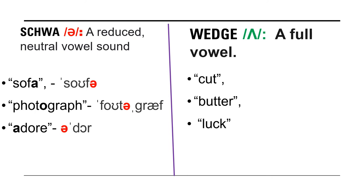Schwa is a reduced neutral vowel sound, while wedge is a full vowel — as in 'cut,' 'butter,' 'luck.' So what is the difference between the sounds, if there is any? There is little to no difference phonetically based on its sound or production between schwa and wedge. We use schwa sound when we don't need to fully articulate the vowels which aren't stressed in the word. In the case of an unimportant vowel which we don't need to articulate fully, we take the easy way and use a reduced sound. We make a schwa because we have got better things to do than pronounce the middle vowel in 'photograph.'